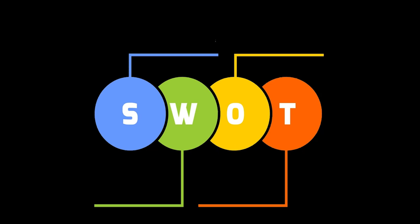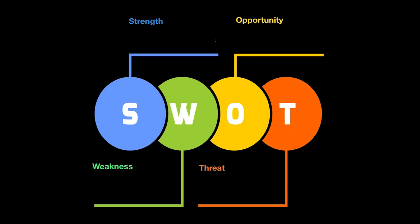The first letter, S, stands for Strength. W stands for Weakness. O stands for Opportunity. And T stands for Threat. So Strength, Weakness, Opportunities, and Threat collectively form the SWOT analysis.